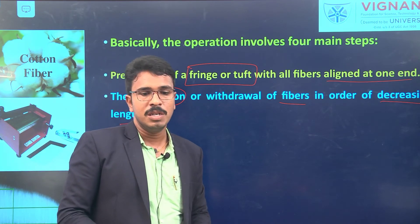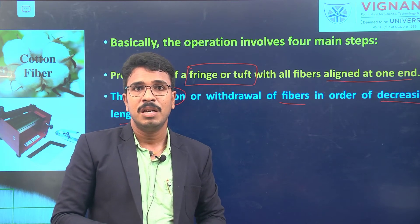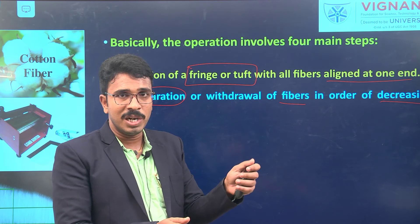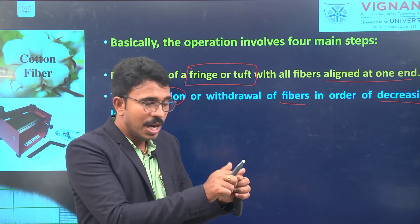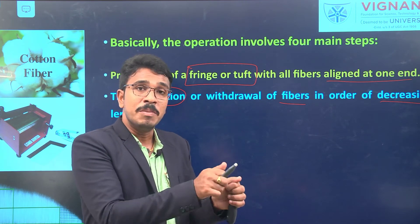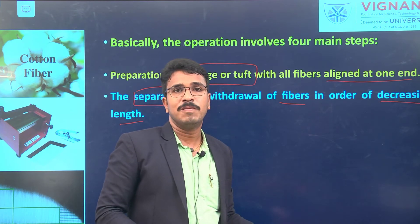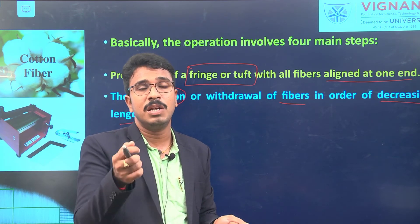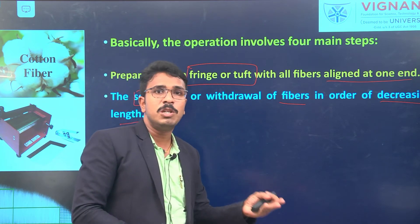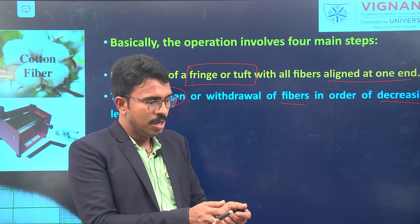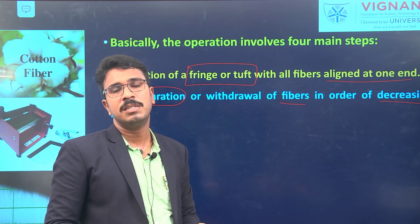Preparation of the tuft is very important. Initially fibers from the bale are not parallelly aligned, so we hold the fibers at one end and draw them, then perform doubling — placing the drawn fibers back on top — and repeat drawing multiple times. This produces a parallel strand of fibers aligned at one end. After preparing the tuft, in the second step we withdraw fibers in decreasing order of length and place each group on a black velvet pad.